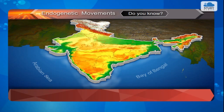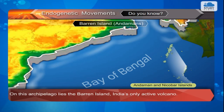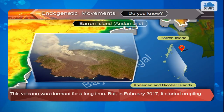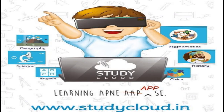Do you know? Barren Island: The Andaman and Nicobar Islands are located to the southeast of the mainland of India. On this archipelago lies Barren Island, India's only active volcano. This volcano was dormant for a long time, but in February 2017 it started erupting. Mainly dust, smoke, and mud are coming out of this eruption along with some lava.